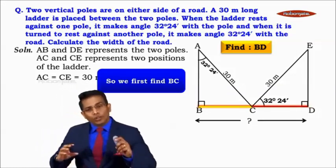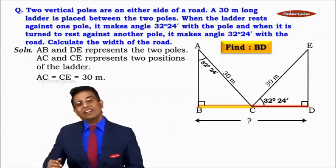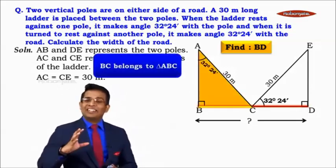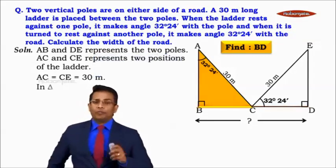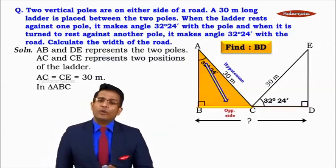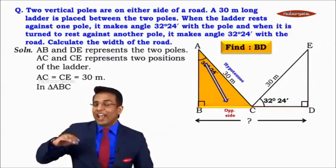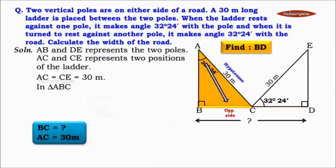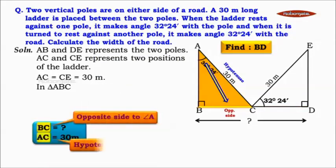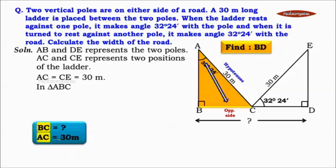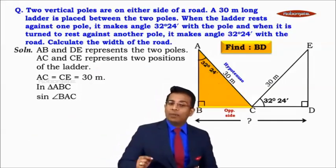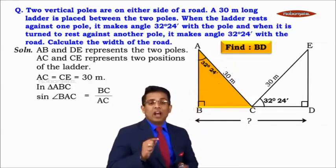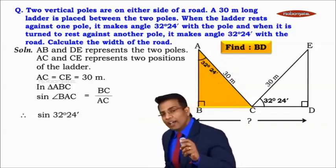BC belongs to right-angle triangle ABC. For the acute angle at A, BC is the opposite side and AC is the hypotenuse. Since we're dealing with opposite side and hypotenuse, the trigonometric ratio to use is sine. So we write: sine of angle BAC = BC / AC.